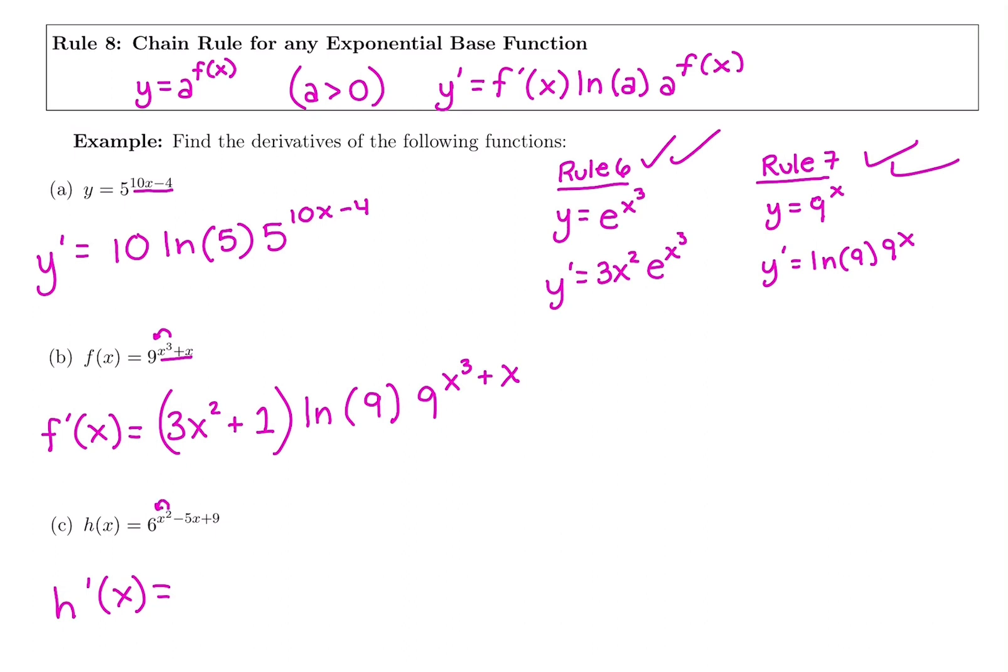So starting with the derivative of the power, derivative of x squared is 2x. Derivative of negative 5x is negative 5. That's our mini rule. So we brought down the power, subtracted 1 for the new power. Derivative of negative 5x is negative 5, and derivative of a constant, a regular 9 with no x on it, is 0.